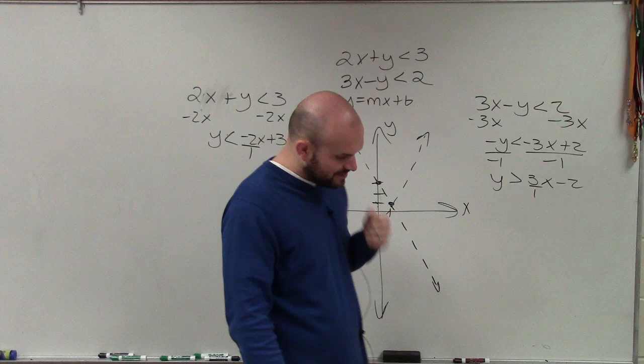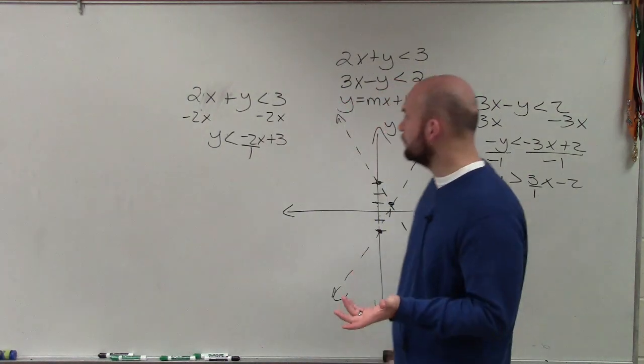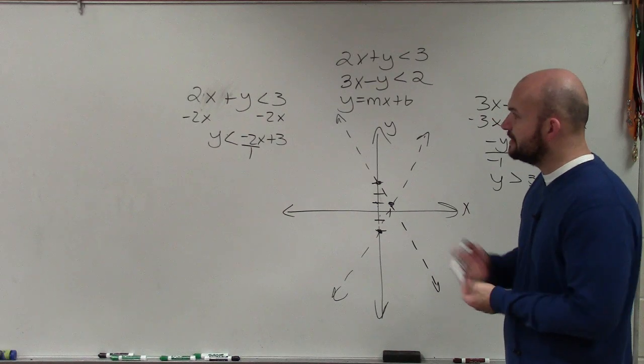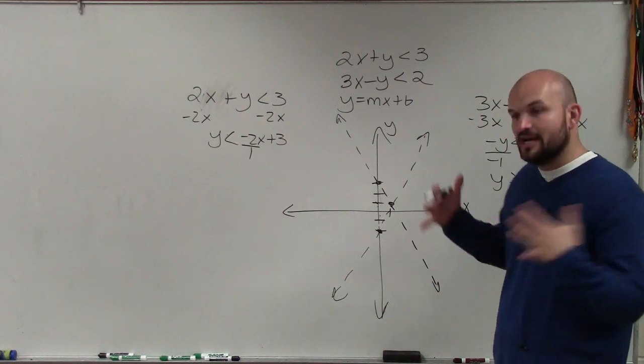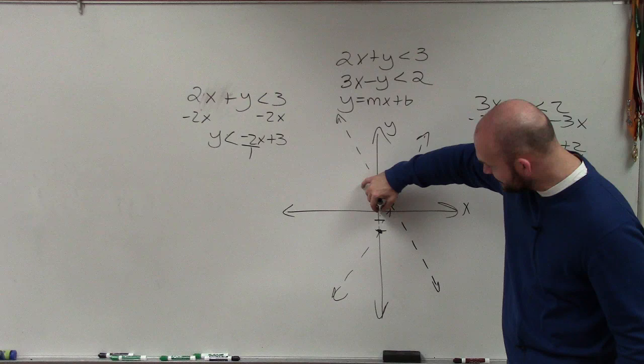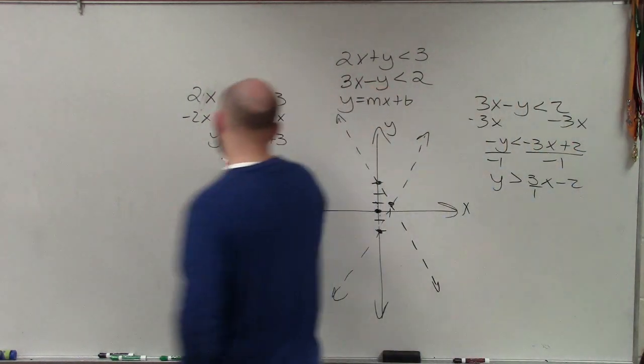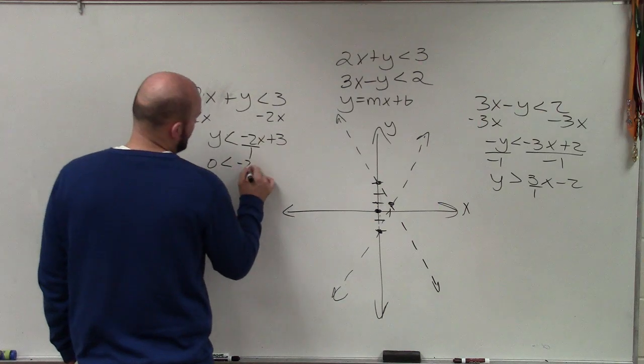All right. So now, ladies and gentlemen, what we're going to be looking at is applying our test points. So to do that, we need to determine a point that we can help us shade. And the best point to always pick, as long as it's not on your lines, is 0, 0. So I plug in 0 in for x and 0 in for y.